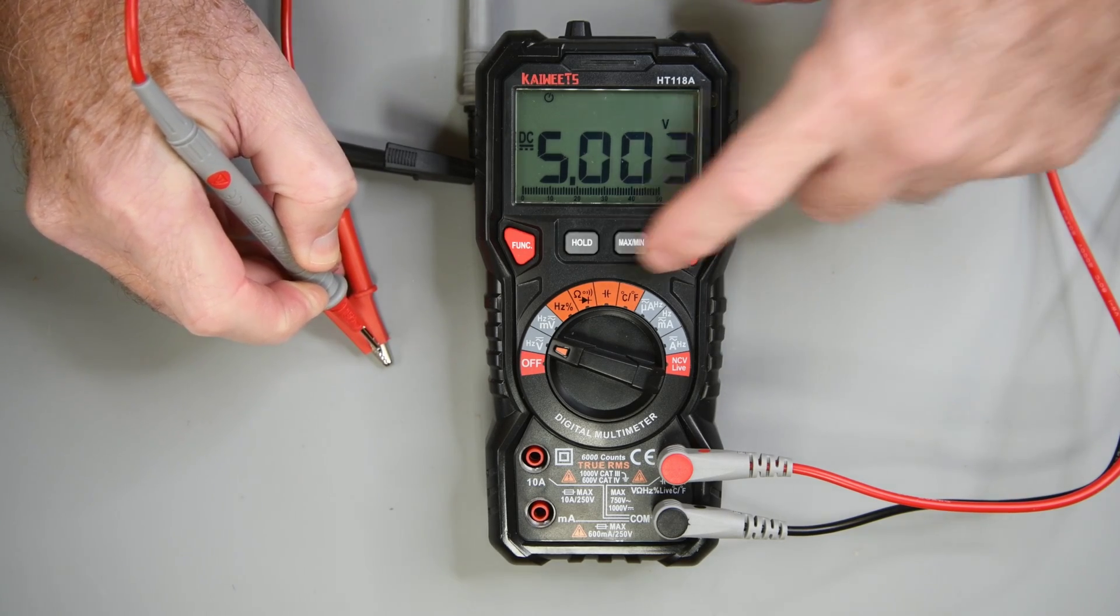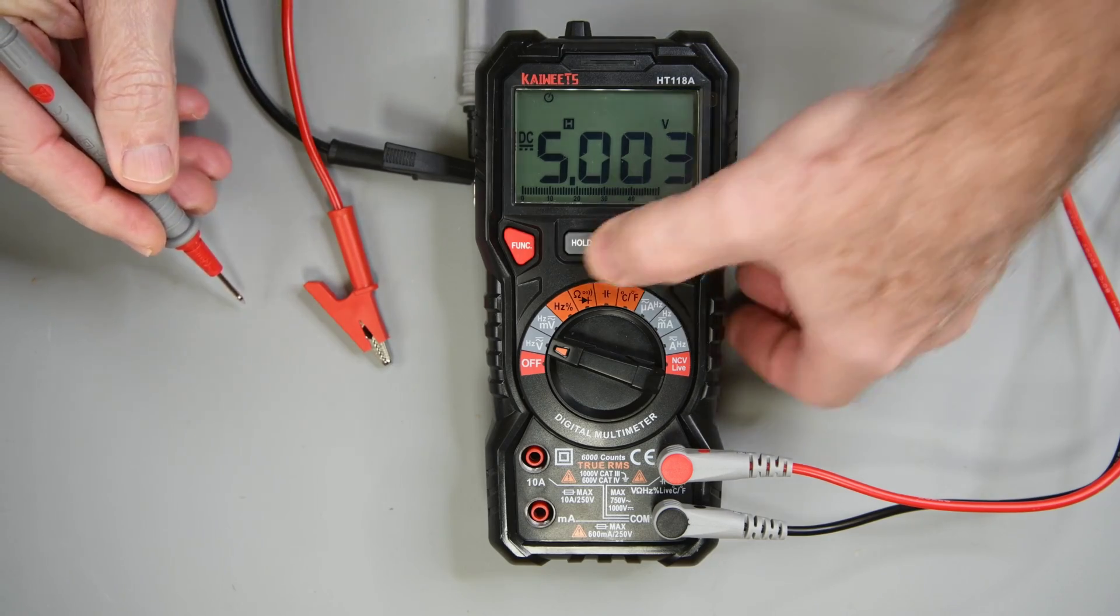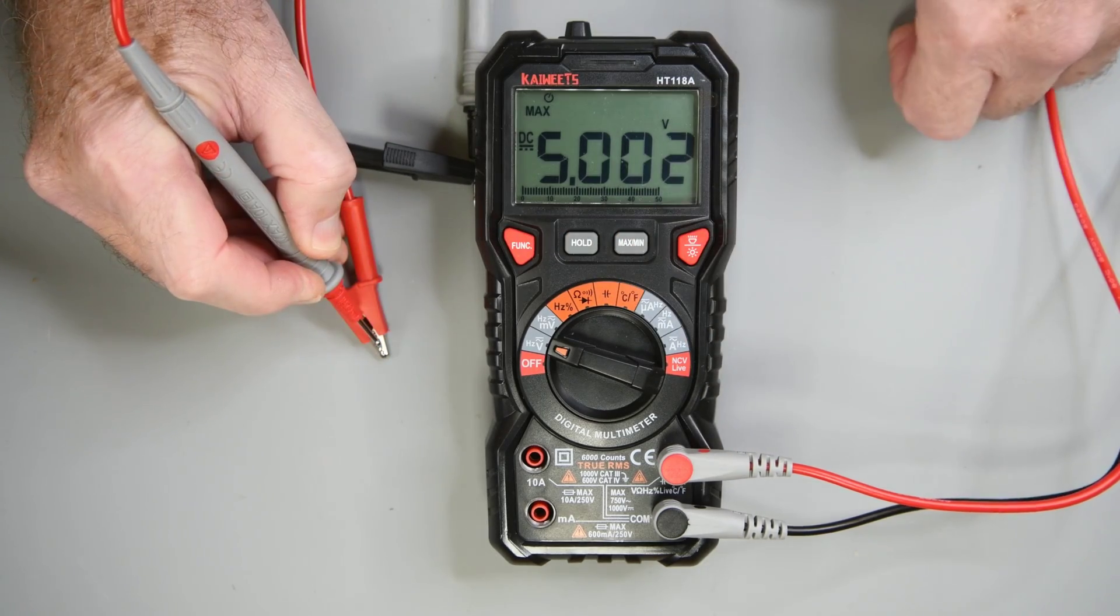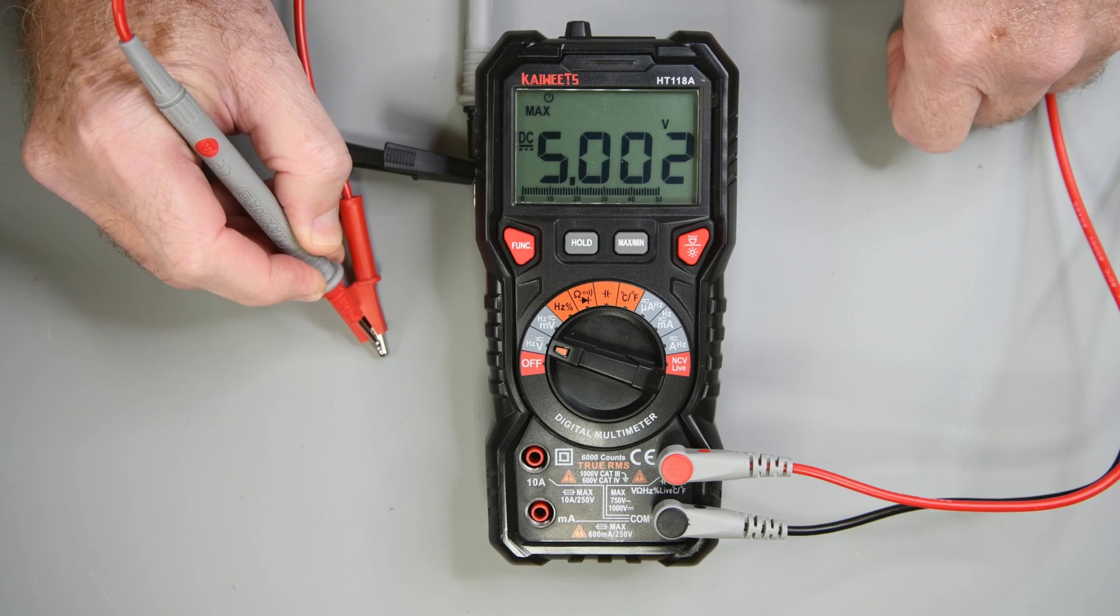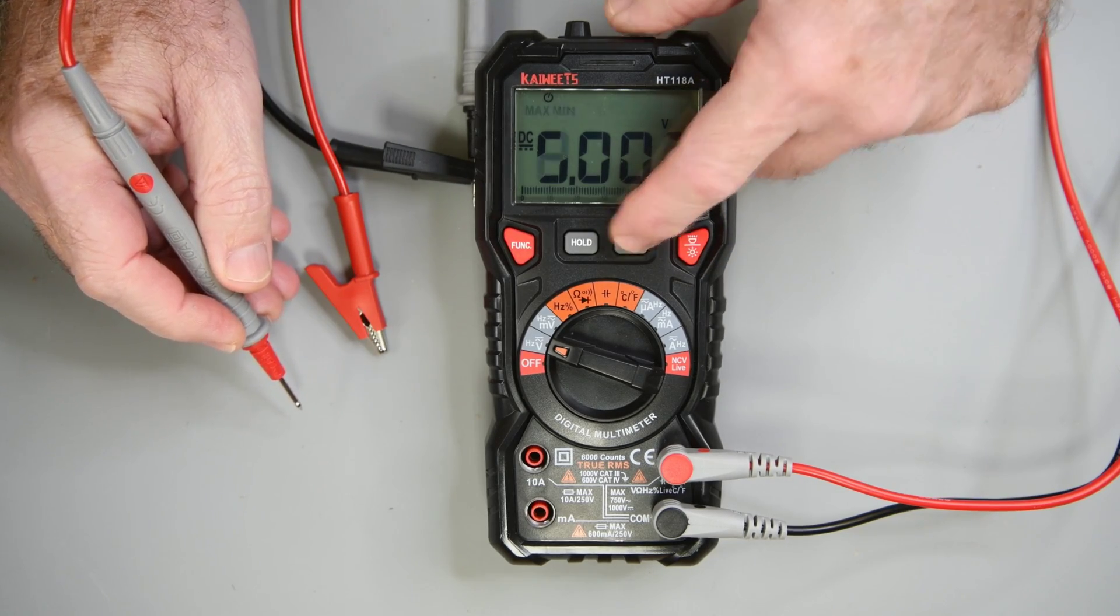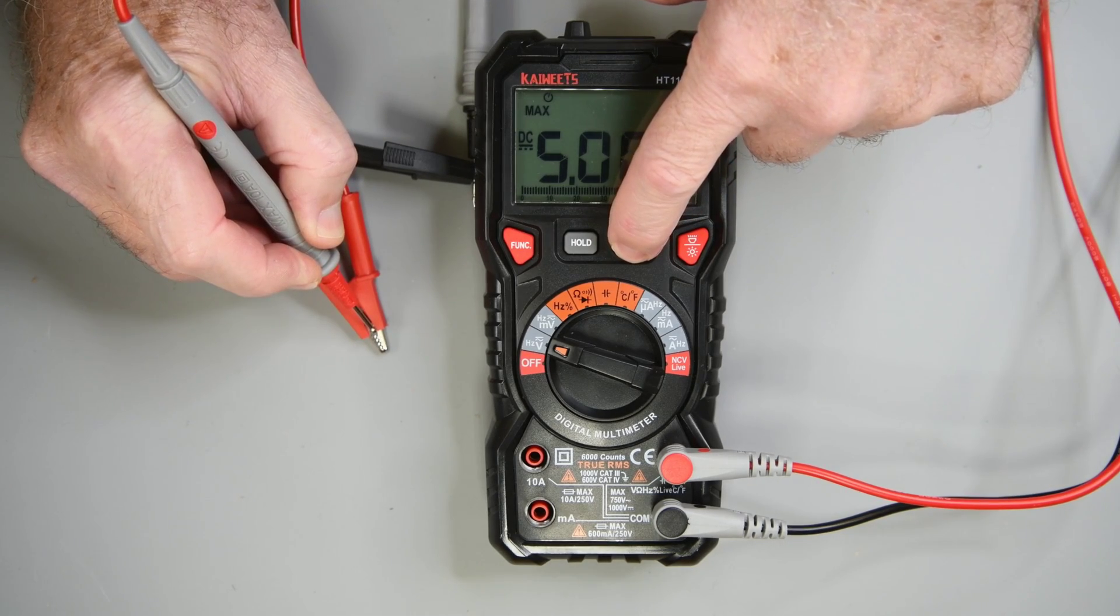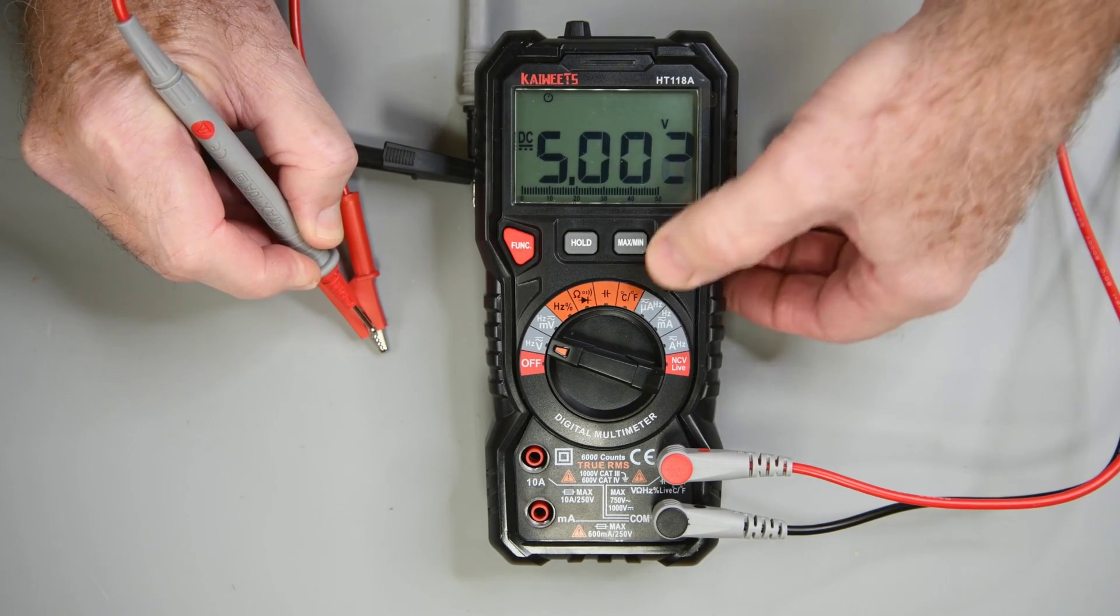There is a hold button. Press it and the display holds on the current reading. Press it again and it goes back to normal. There is a min max button. Press it and the maximum reading is shown. Press it again and the minimum reading is shown. Each press just moves between maximum and minimum. Have to press and hold to exit the min max mode.